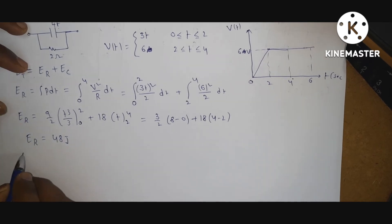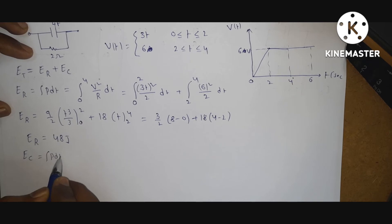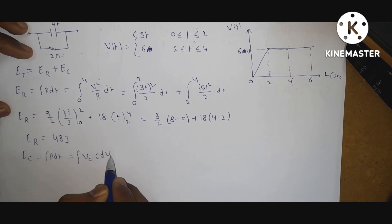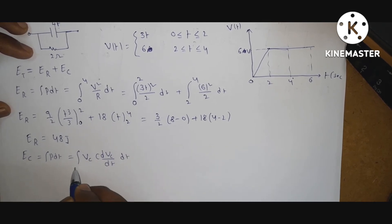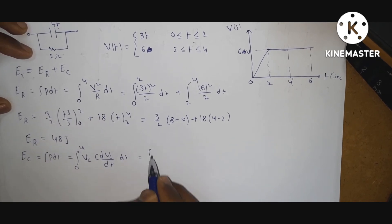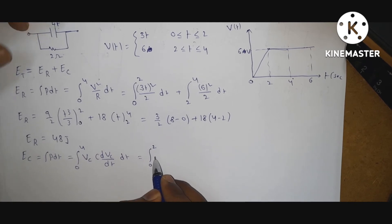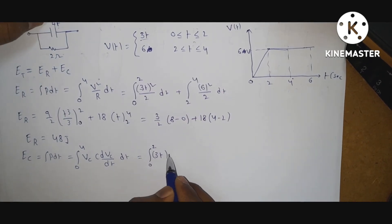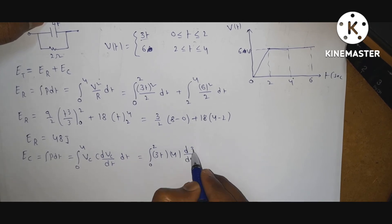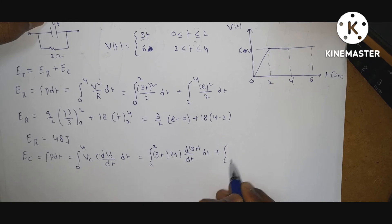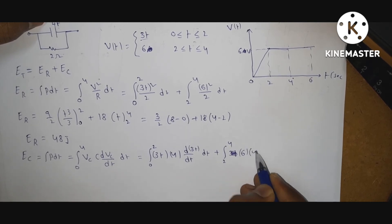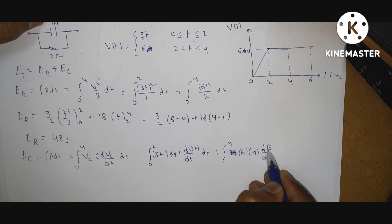Now, energy absorbed by the capacitor: Ec is equal to integral of P·dt. The power across the capacitor is Vc into C·dVc by dt. So Ec equals integral from 0 to 4 seconds of Vc·C·dVc/dt dt. This splits into: from 0 to 2, (3t) into 4 into d/dt(3t) dt, plus from 2 to 4, (6) into 4 into d/dt(6) dt. Since the derivative of the constant 6 is zero, the second term is zero.